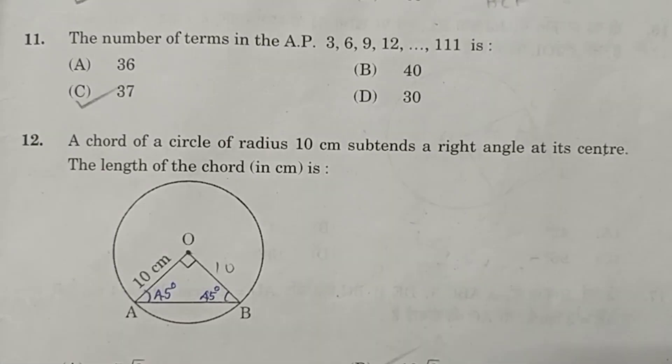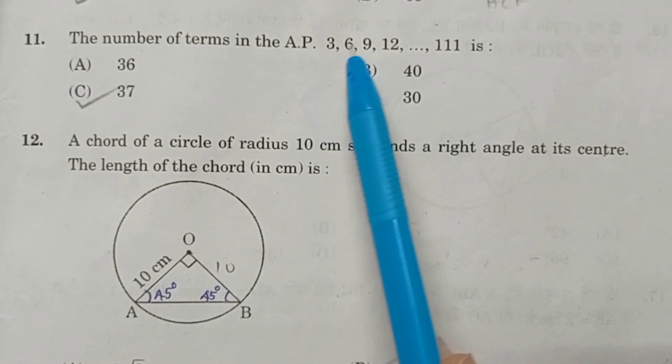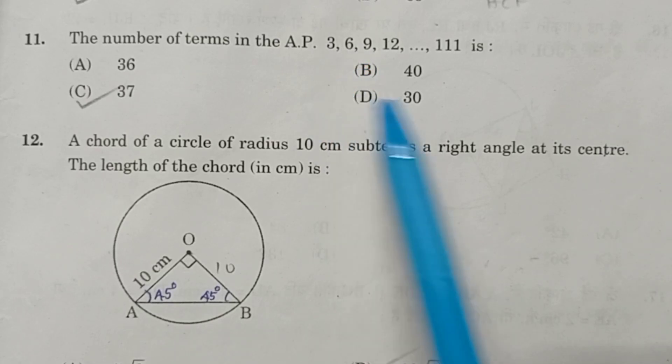Question number 11. The number of terms of an AP 3, 6, 9, 12, etc., up to 111 is. The last term we know is 111. AN equals A plus N minus 1 into D. AN is given 111, first term A is equal to 3, common difference is 6 minus 3, which is 3. Substituting each value, N we will get as 111 by 3, which is equal to 37.